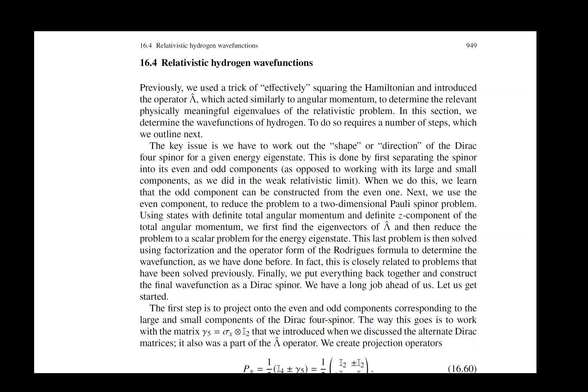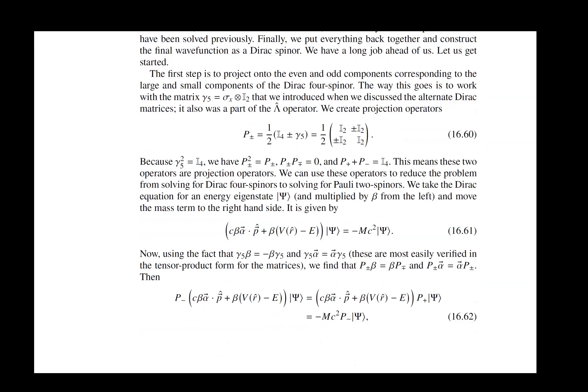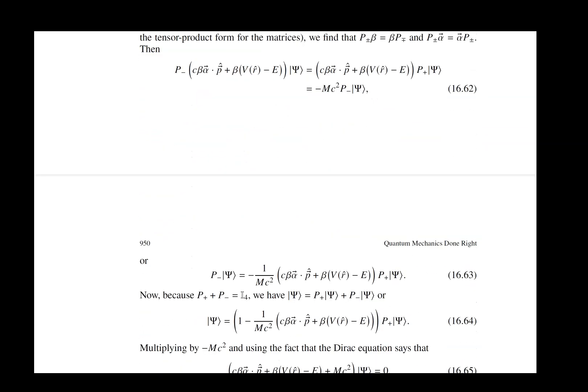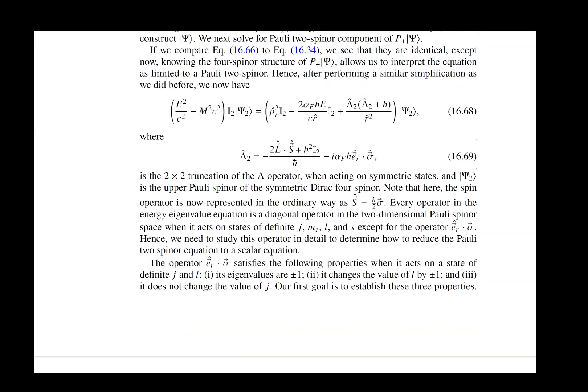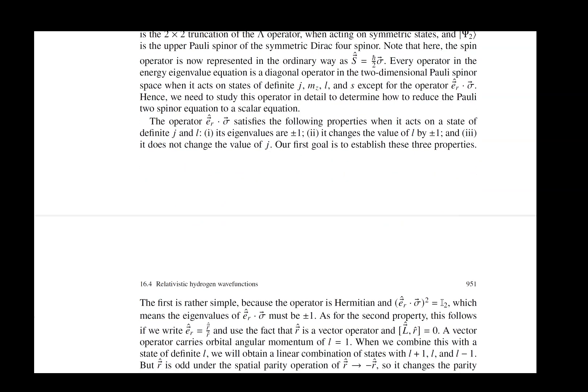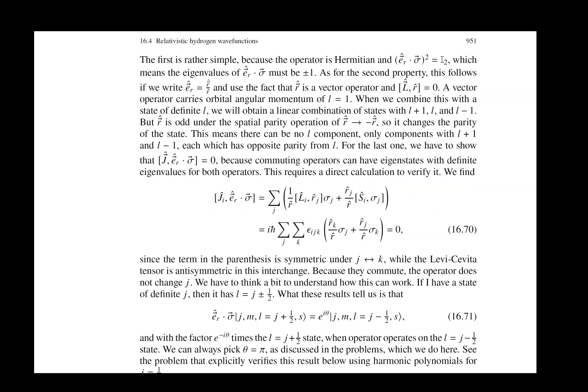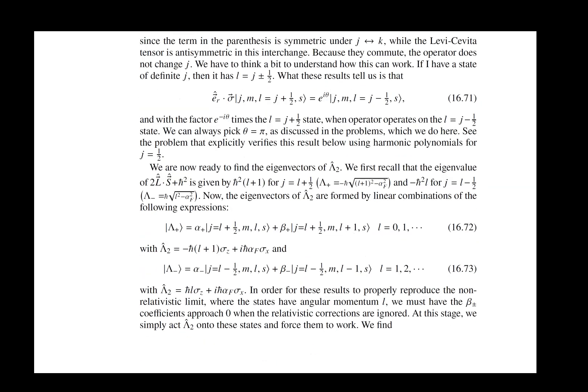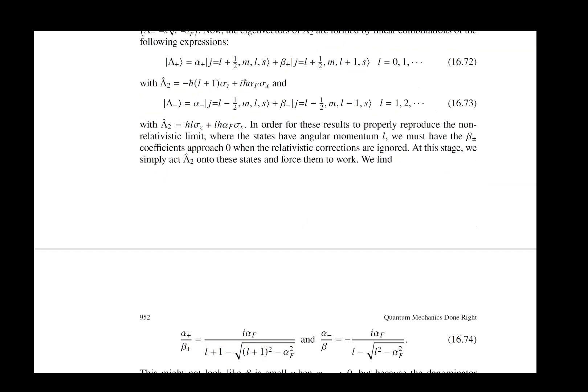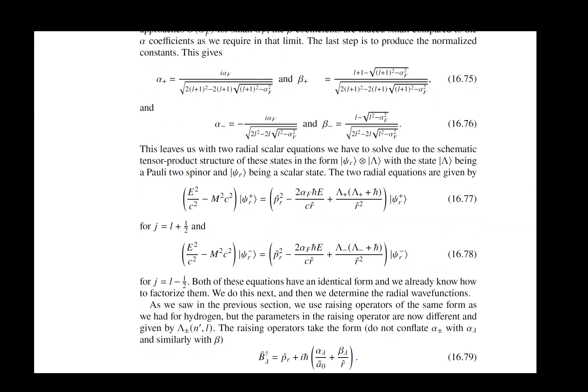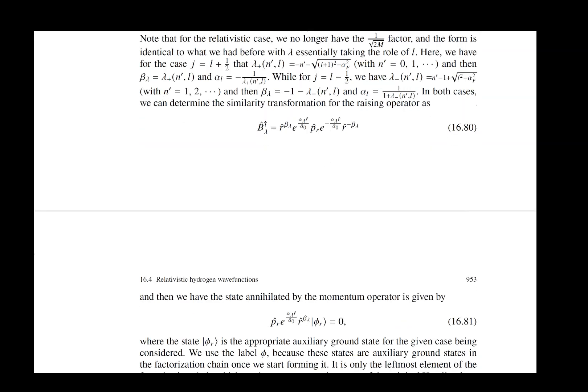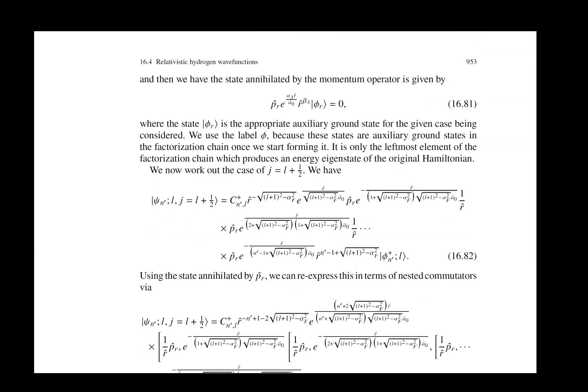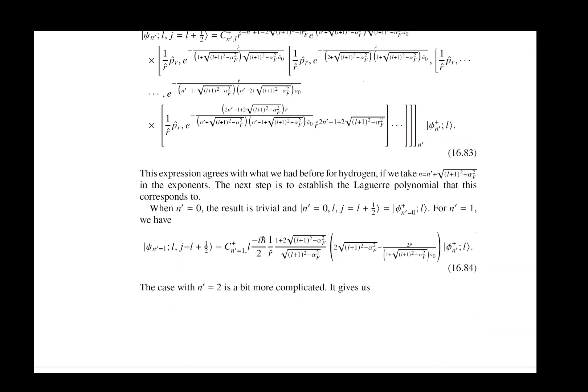Then we look at the relativistic wave functions. This requires us to do some projection operators to get the system from a 4x4 equation to a 2x2 equation and then to a scalar equation, and then we have to use the projection operators to go back to first a 2x2 equation and then to a 4x4 equation that has a solution as a Dirac 4 spinner. It's just algebra. None of it is particularly complicated, but it's so easy to make a mistake.